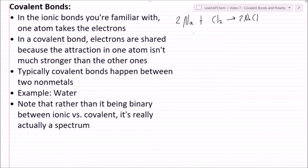Now in a covalent bond, electrons are shared because the attraction in one atom isn't much stronger than the other ones. Here, chlorine is much more what we call electronegative than sodium—it wants electrons much more, so it's able to rip the electrons off of sodium and take it for itself. That would be an ionic bond.